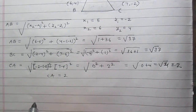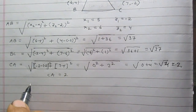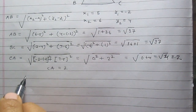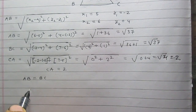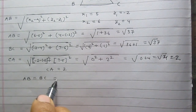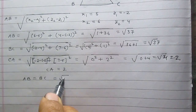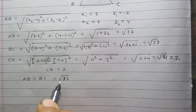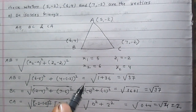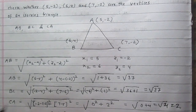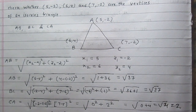We see that side AB equals side BC, both equal to √37. Therefore, triangle ABC is an isosceles triangle with AB equal to BC.